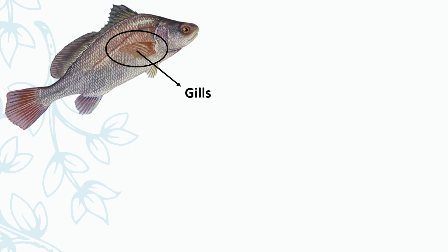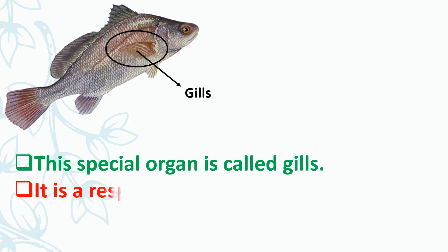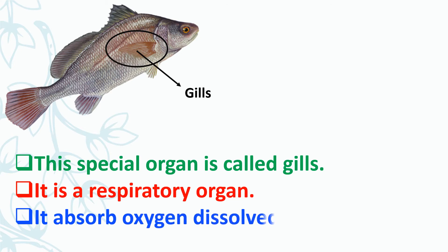Gills. This special organ is called gills. It is a respiratory organ. It absorbs oxygen dissolved in water.